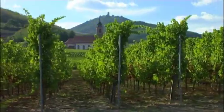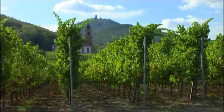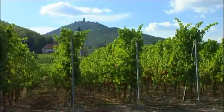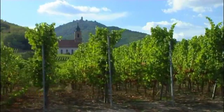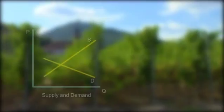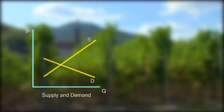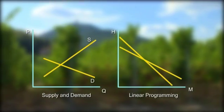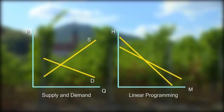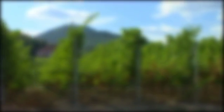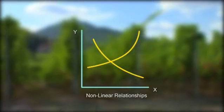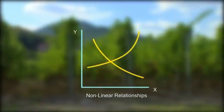In this section, we look at non-linear functions. Until now, we've focused on problems where we can use straight lines to describe relationships between variables. This included supply and demand curves in film 2 and linear programming earlier in this film. But not all relationships can be described in that way, so here we begin to examine non-linear relationships.